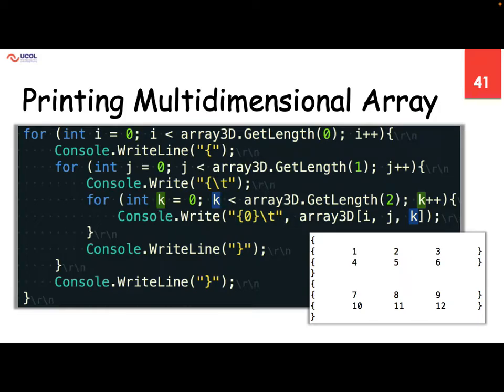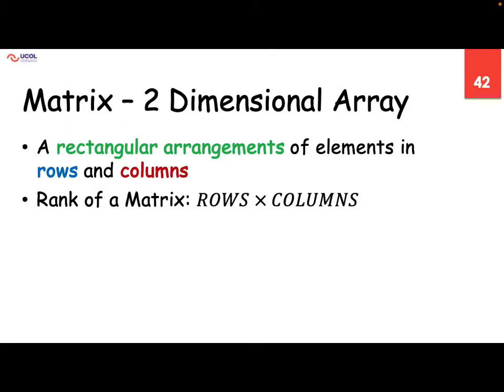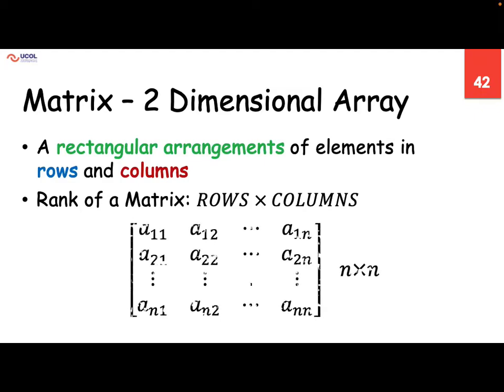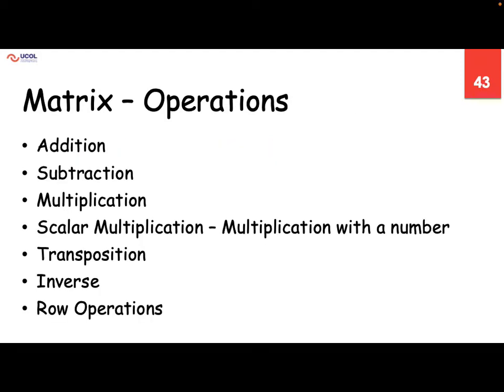Once we can access each and every element, we can do the processing — maybe applying specific processing on a specific row, on a specific dimension. Rectangular arrangement of elements with rows and columns is a two-dimensional array — we can use it to do matrix mathematics. Rows and columns — that is exactly our tabular form, the matrix. So we can add, subtract, multiply, do scalar multiplication, transposition, inverse, and row operations.